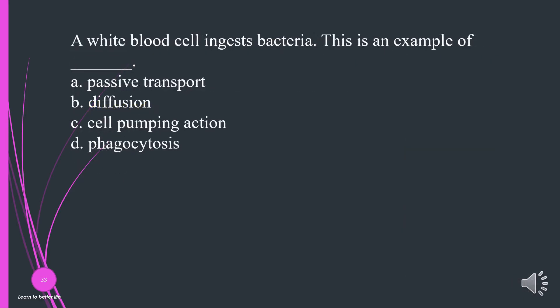A white blood cell ingests bacteria. This is an example of what? A. Passive transport. B. Diffusion. C. Cell pumping action. D. Phagocytosis. The answer is D, phagocytosis.